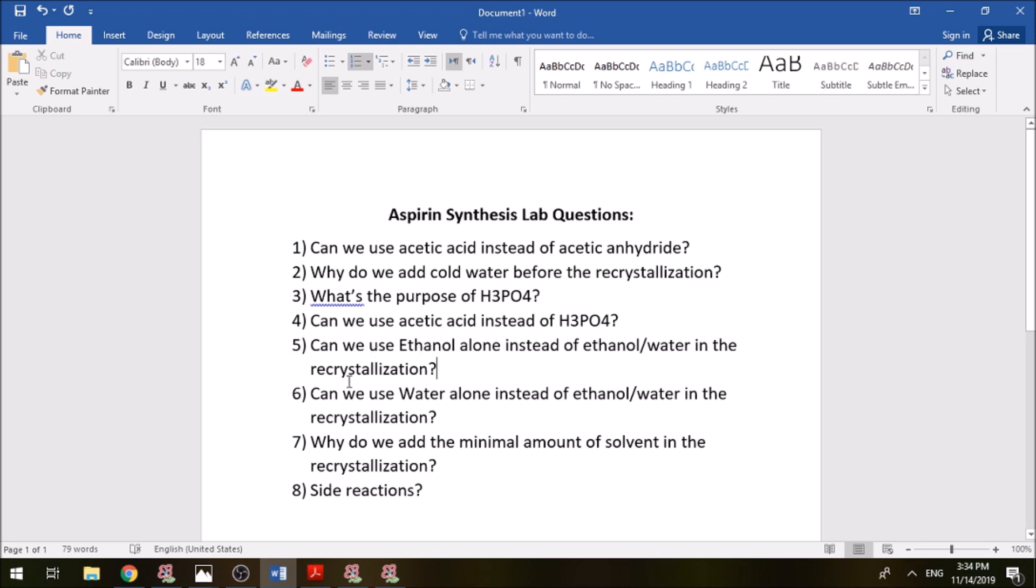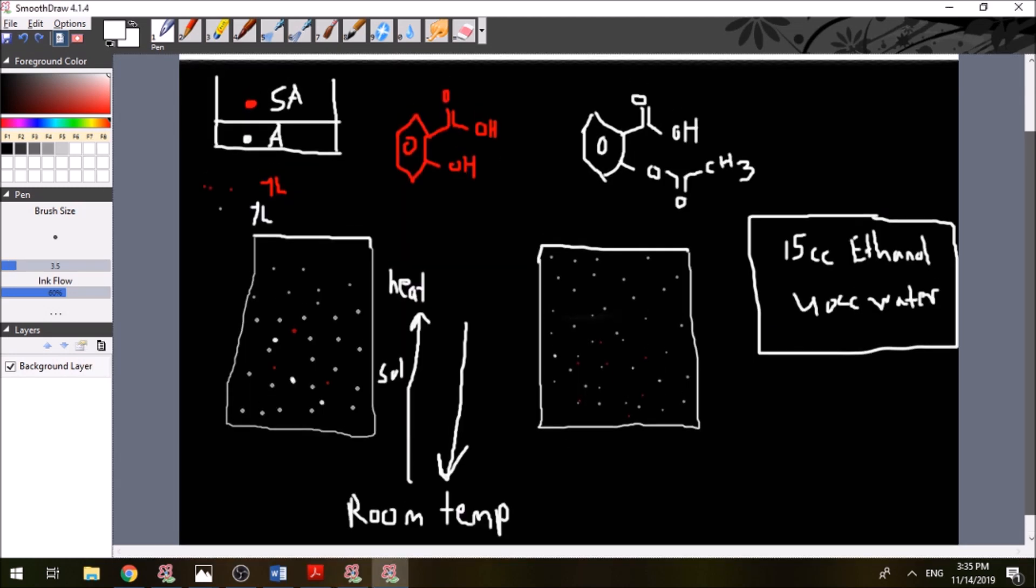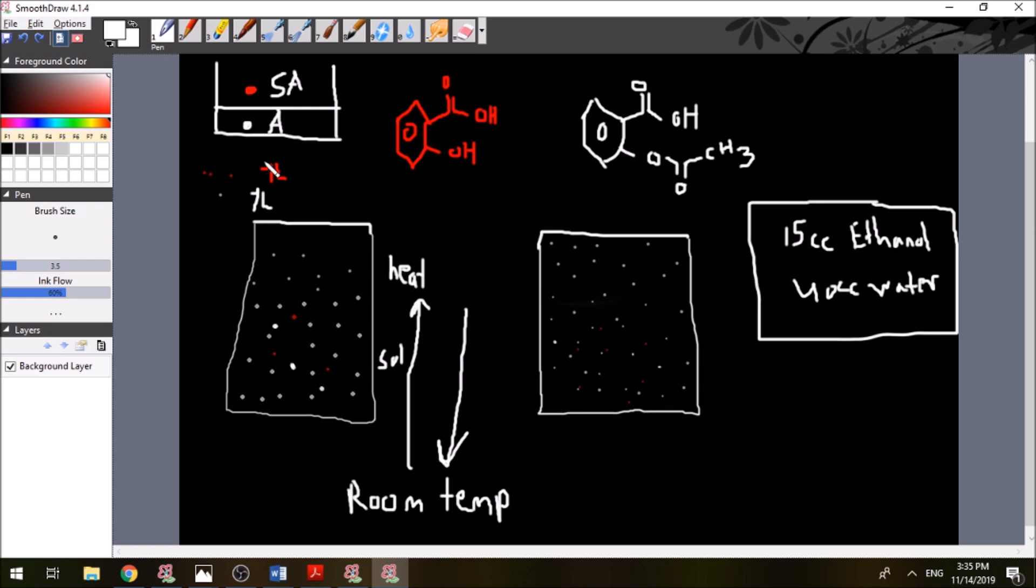We will answer question five and six together which in my opinion are the most complicated. It's going to be a little hard to explain but I will try as much as I can. It asks us can we use - so it's basically about the recrystallization solvent. In this reaction we use ethanol 15 milliliters of ethanol and then we add 40 milliliters of water and it's asking us now can we use ethanol alone instead of ethanol water in the recrystallization.